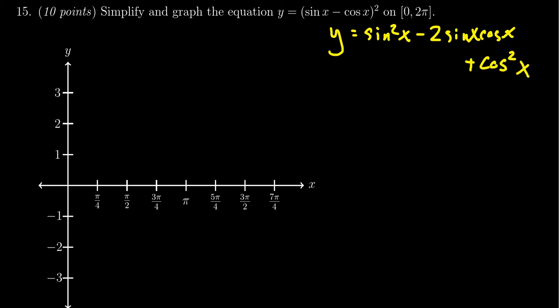Now, sine squared plus cosine squared is equal to 1, so it's going to give us 1 minus 2 sine x cosine x, which is still a little bit more difficult than we want. But the 2 sine x cosine x, by the double angle identity for sine, this actually would change into y equals 1 minus sine of 2x. So that's the function that we want to graph.